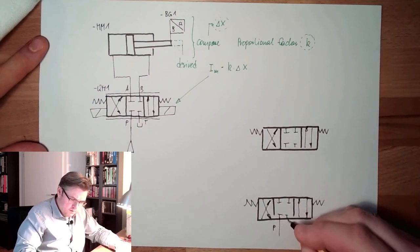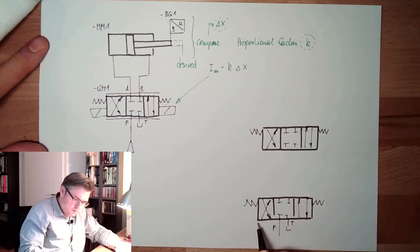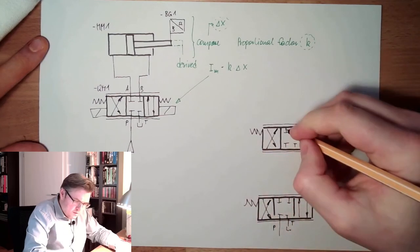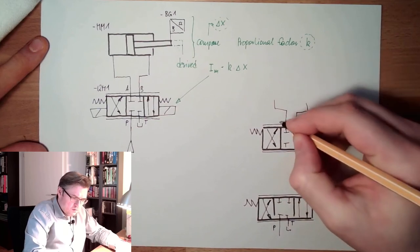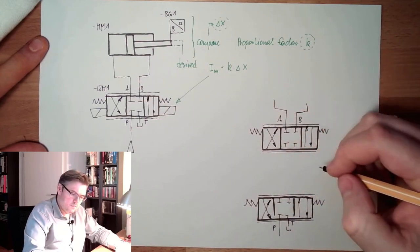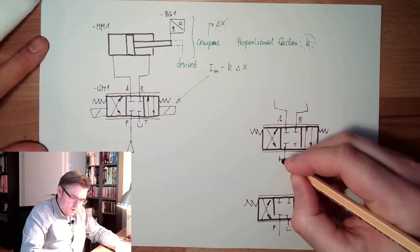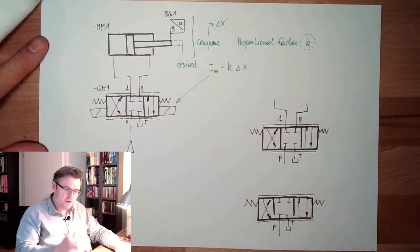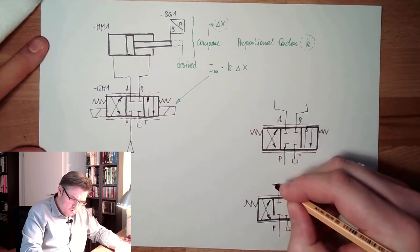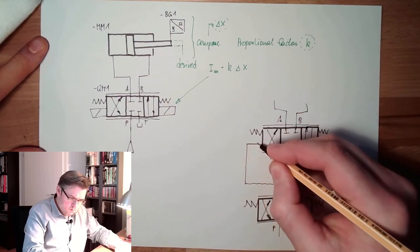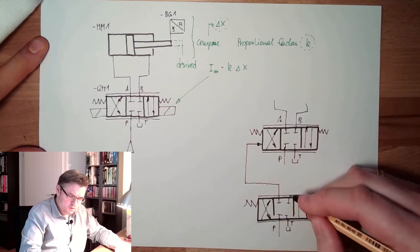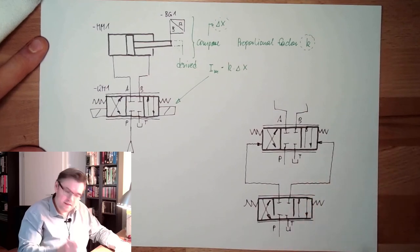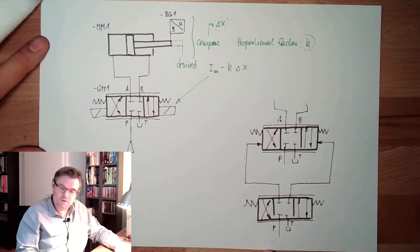Here we have the P-connector, here we have the tank connector. And of course this is a proportional valve, this is a proportional valve, so I make the stripes here. Here we go to the cylinder, so this is A and B. Here we go to the pressure line and here we also go to the tank. Everything looks the same, but now here we are controlling the position of the main piston, of the piston of the big control valve.